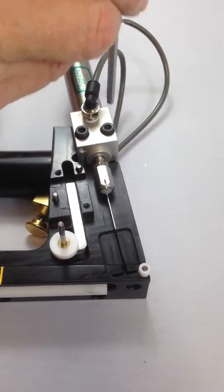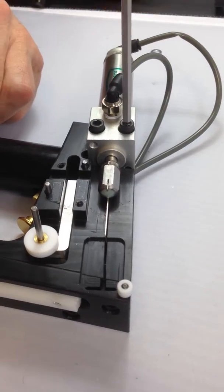Then with an allen key, remove the two bolts that secure the air cylinder to the shuttle.